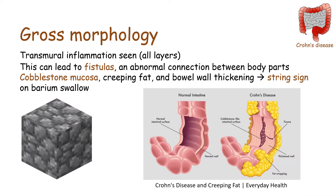Another characteristic finding of Crohn's disease is a cobblestone mucosa. Because we have deep ulcers due to transmural inflammation, you're going to see deep ulcers and fissures that produce a cobblestone appearance in the bowel — essentially fissures and deep ulcers in areas of more raised bowel, making it look like cobblestone. Here we can see what that looks like inside the large bowel.